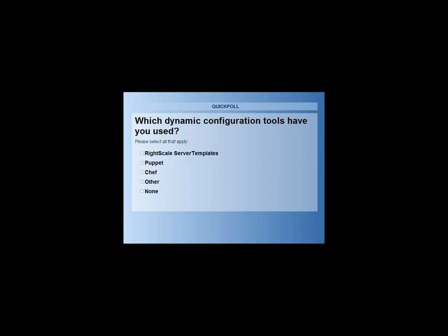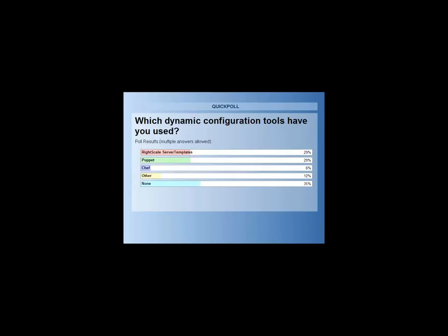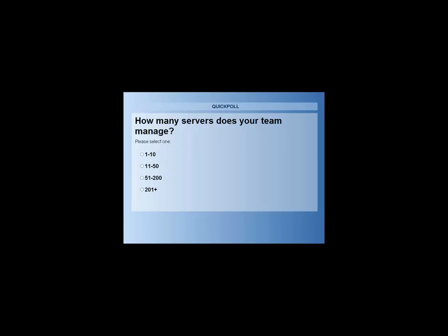Just two more questions and then we'll get started. Which dynamic configuration tools have you used? Select all that apply — if you've ever used a RightScale server template, select that option. Or maybe you've tried Puppet, Chef, or some other dynamic configuration tools. A very interesting split: several of you have tried server templates, a large percentage is on Puppet, but then also an equally large percentage has never used a dynamic configuration tool. This is very helpful information to tailor the content of the webinar.